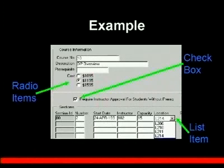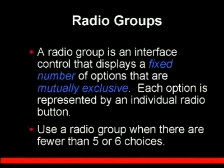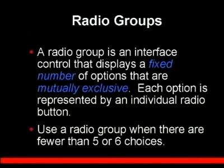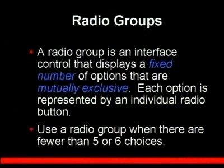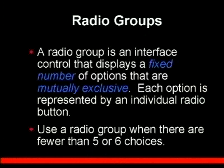A radio group is an interface control that displays a fixed number of options that are mutually exclusive. Each option is represented by one radio button. For example, we had three different radio buttons for the cost of a course, meaning the course can only have one cost and the user can only choose one. As a point of advice, a radio group is a good idea when there are fewer than five or six choices. Once you get a huge list of radio groups, it starts to get confusing to the user because they're all displayed on the form.